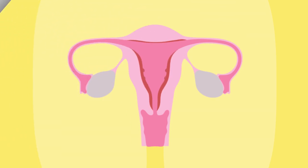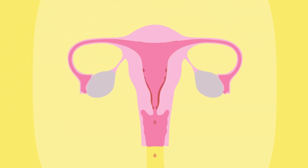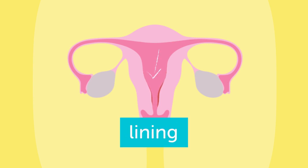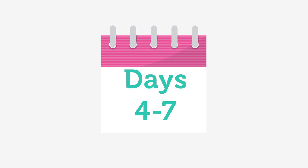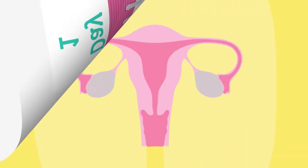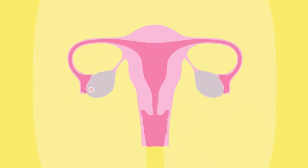Let's look at the cycle. The start of the cycle — day one — is when bleeding from the vagina begins. This is caused by the loss of the lining of the uterus with a little blood. Around days four to seven, the loss of blood stops. The lining of the uterus begins to thicken, and an egg cell starts to mature in one of the ovaries.